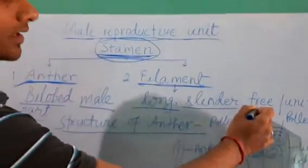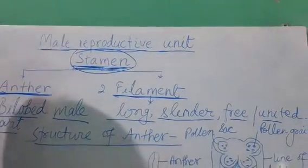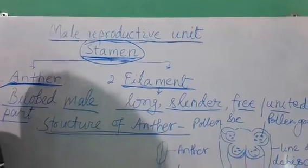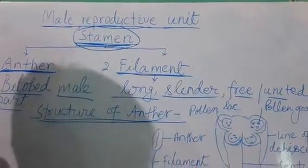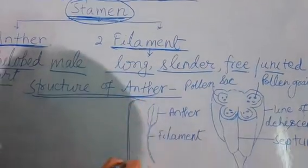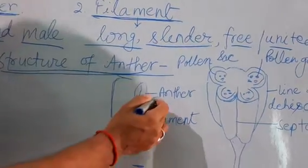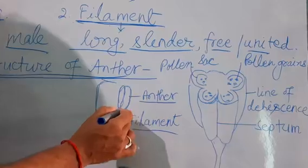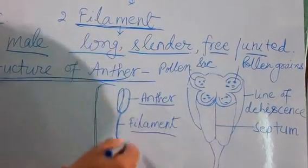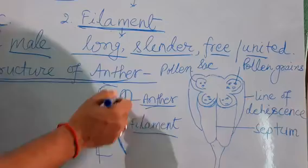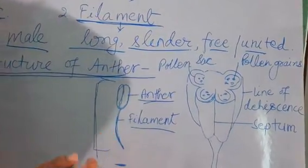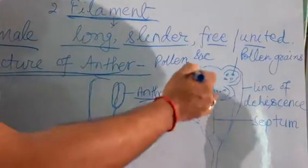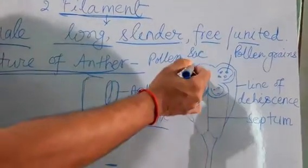Now we focus on the structure of the anther. The stamen has two parts: one is the anther and the second is the filament. The anther is a bilobed structure, and the filament is the long cylindrical part. Together, the anther and filament are known as the stamen.